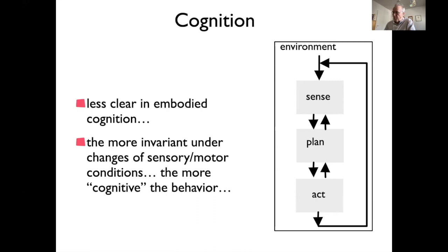Generally, the longer the path from sensing to acting — the less directly sensory inputs determine behavior — the more cognitive the behavior is. In a feedforward architecture, this can be formalized as the number of computational steps. In embodied cognition, there's less clear directionality. One way to characterize it is through invariance: cognitive qualities of behavior don't depend on sensory-motor details. For instance, you recognize a book even as its appearance changes as you approach it, and your motor behavior varies depending on obstacles, but the invariant goal remains — getting the book in front of you.